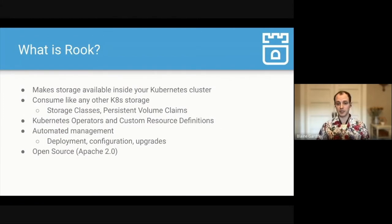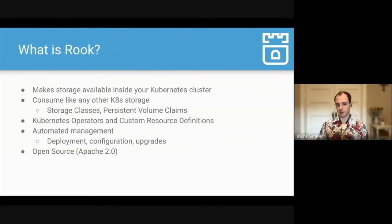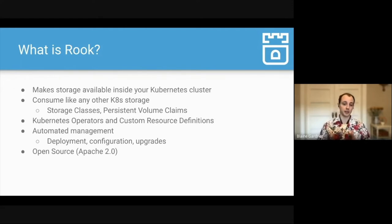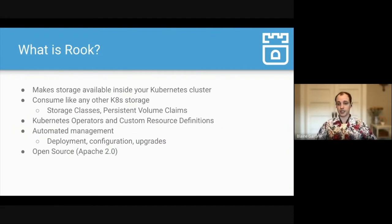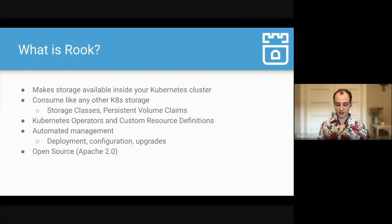Rook aims to help solve these issues. Rook makes storage available inside of your Kubernetes cluster. This storage you can consume like any other Kubernetes storage — you can make a storage class for it, and users can create persistent volume claims to get access to that storage for their applications. Rook is an operator with many operators available, but generally one operator runs at a time, with custom resource definitions to define and set parameters for storage. Rook provides automated management including deployment, configuration, and upgrades, and it is fully open source.